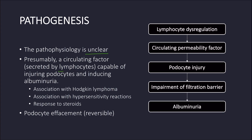The involvement of lymphocytes may explain the association with Hodgkin's lymphoma, which is a malignancy of lymphocytes, and hypersensitivity reactions in which there is an increased activation of the immune system. It may also explain why minimal change disease is remarkably responsive to corticosteroids, because steroids inhibit lymphocytes.